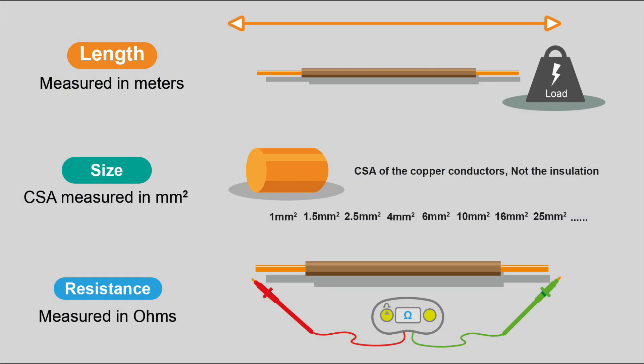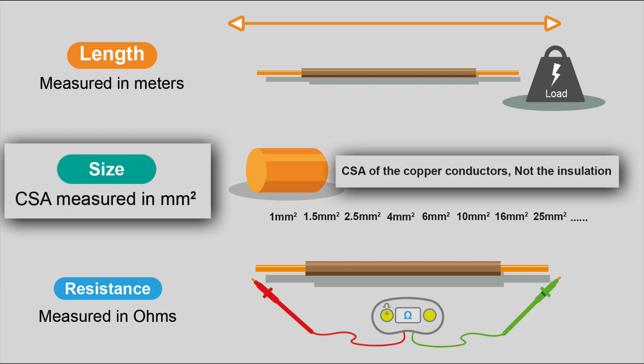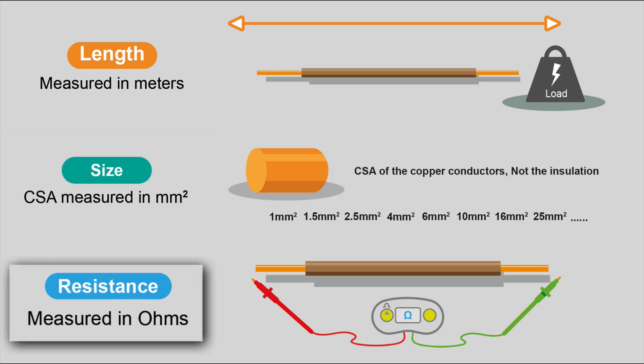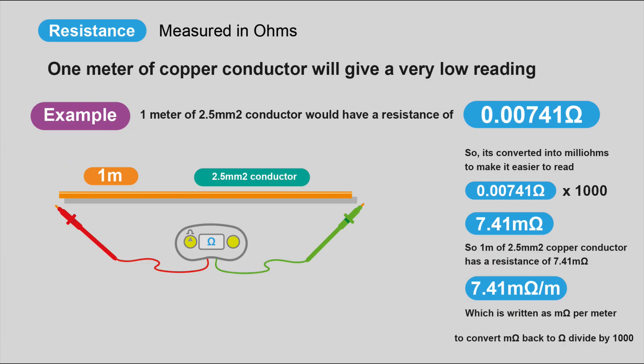So it's really simple to work out the resistance of our cable. We just need to know how long the cable is, what size the cable is in millimeters squared, and what the resistance per meter of the cable is. Resistance is a measure of the opposition to current flow in a cable and it is measured in ohms.